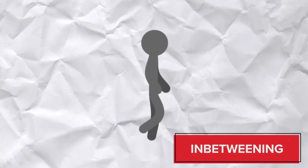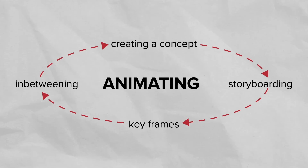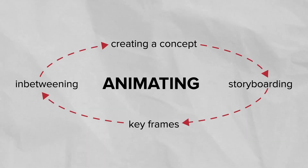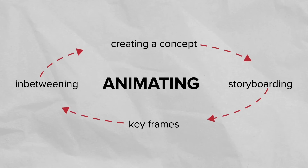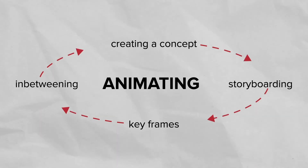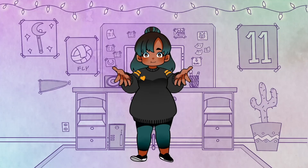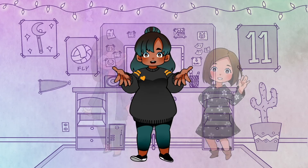The more images you add, the smoother the animation becomes. This is called in-betweening. Animators repeat this process for every scene in an animation. Most animations consist of 15 to 60 or more images for just one second of a scene. Movies are made up of thousands of these individual scenes.